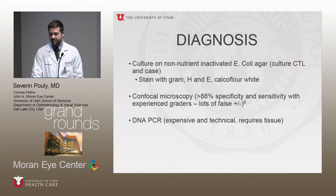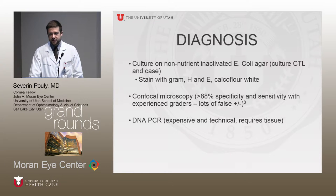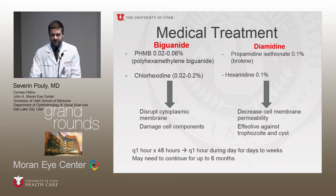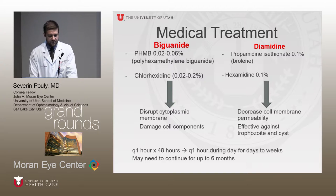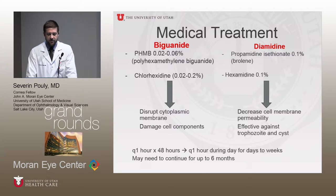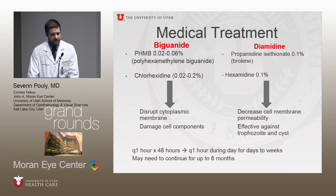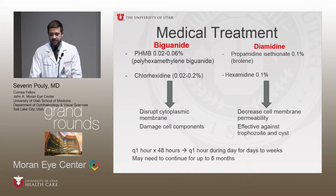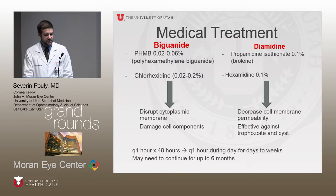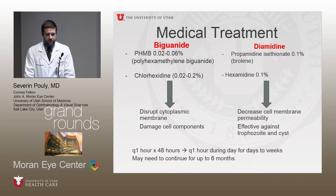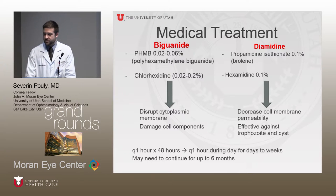Recommended medical treatment involves two classes of medications that work synergistically. A combination of agents is recommended because of the risk of resistance. The first class is the biguanides — PHMB in low concentration and chlorhexidine, which is less toxic to the corneal epithelium in low concentration. These work by disrupting the cytoplasmic membrane and damaging cell components. The second class is diamidines, which include propamidine and hexamidine, effective against both trophozoites and cysts.